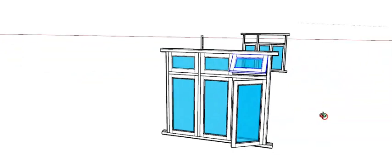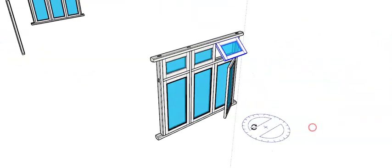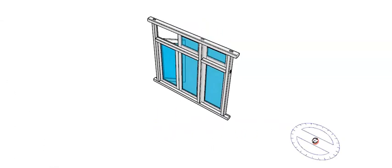To review: the top member is the head, the bottom is the sill, the vertical side members are the posts, the central vertical member is the mullion, and the horizontal intermediate members are the transoms. These are the key terms related to Tikkun windows.